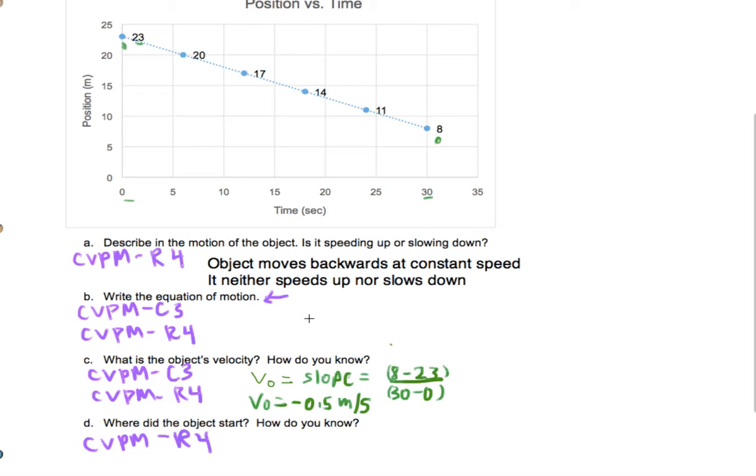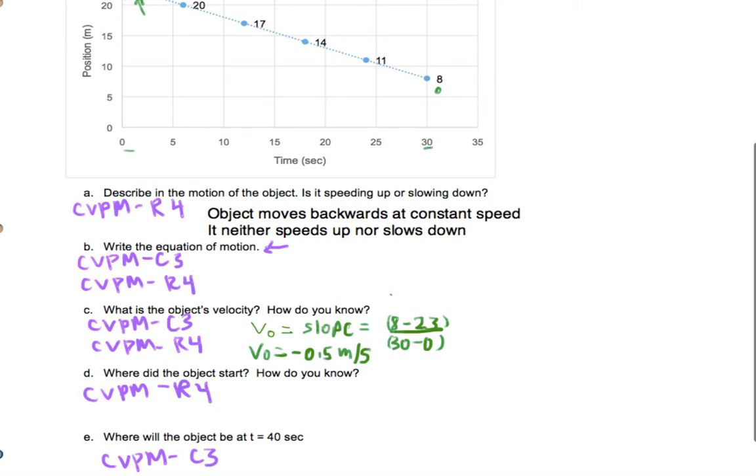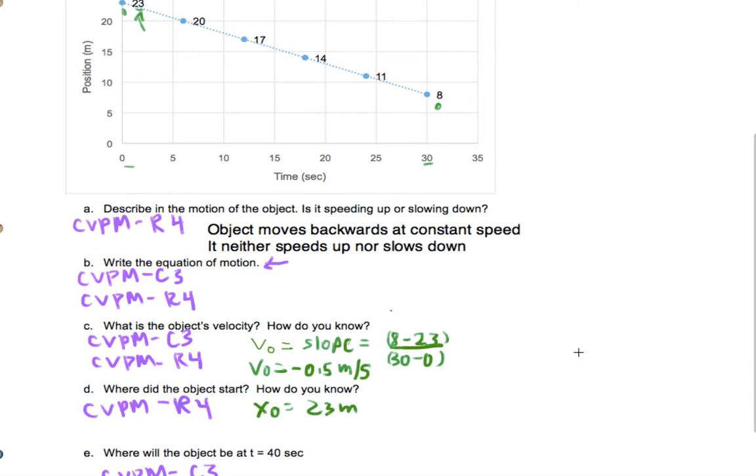Now, the initial position, where it starts, is at 23. So actually, I can go ahead and do part d next. So x0 is 23 meters, and I know that from looking at the graph.